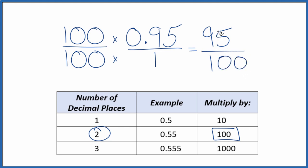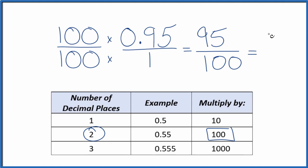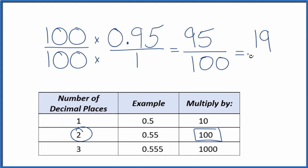And we have our fraction, 95 over 100. We can reduce this further though, because 5 goes into 95 19 times. It goes into 100 20 times. So we've simplified the fraction 95 over 100 down to 19 over 20.